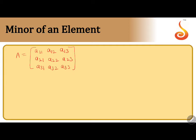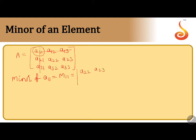Now, for example, if you want to find the minor of element A11 — minor of A11, it is denoted by capital M11. It is the determinant of the submatrix obtained by deleting the first row and first column. The remaining elements are: a22, a23, a32, a33.